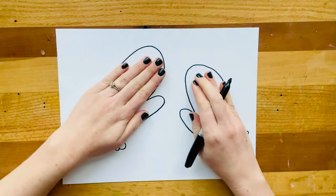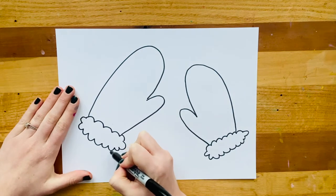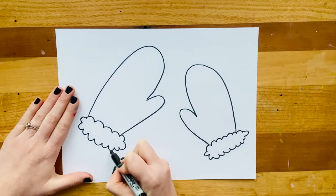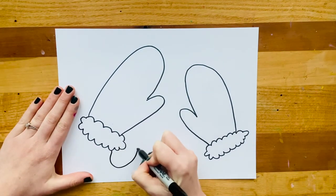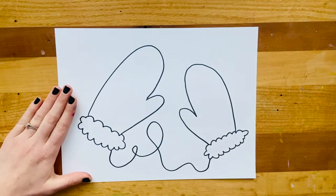Now, sometimes what we do to hold our mittens together so we don't lose them is to create a little line. It's like a chain that goes inside your jacket. So we can create that little line from one end, make it twist and curve and twirl, and then come to the other mitten.